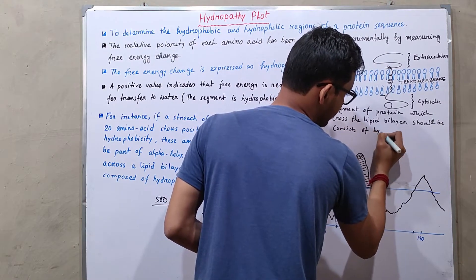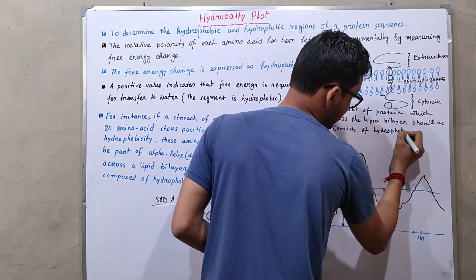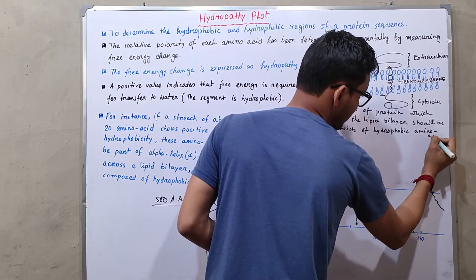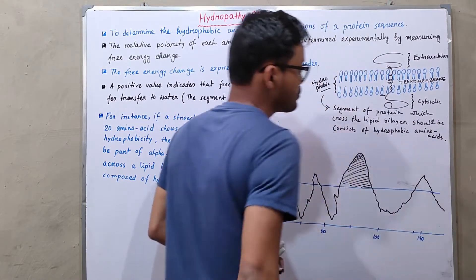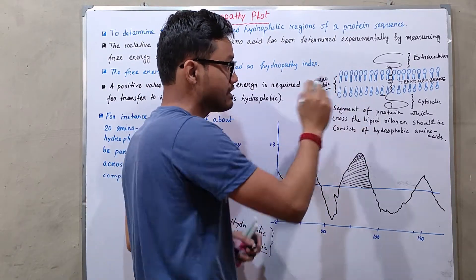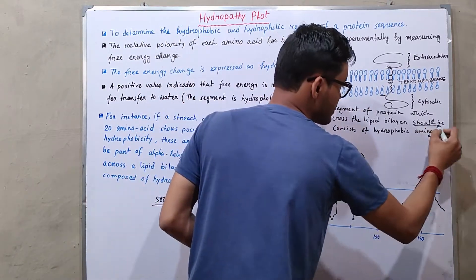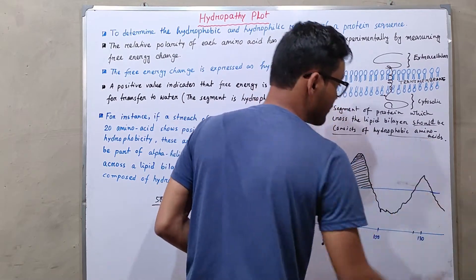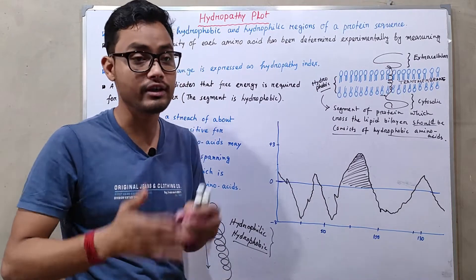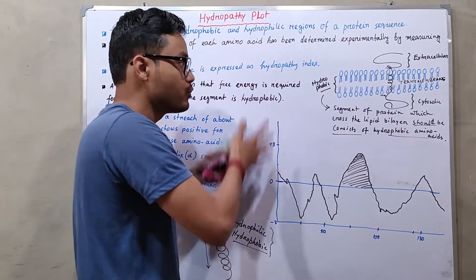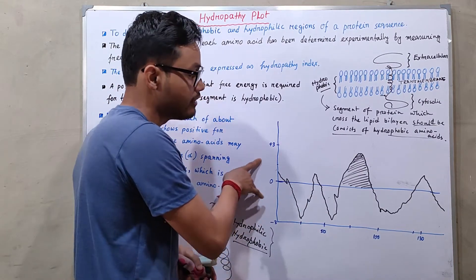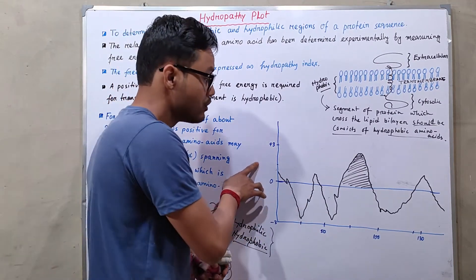The segment of the protein that crosses the lipid bilayer should consist of hydrophobic amino acids. To determine whether a protein actually crosses the transmembrane portion or lipid bilayer, we can plot a hydropathy index or hydropathy plot.